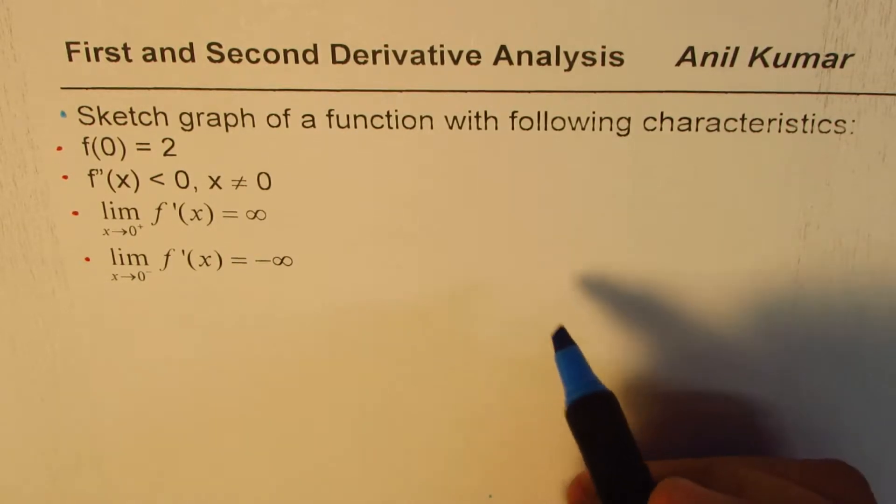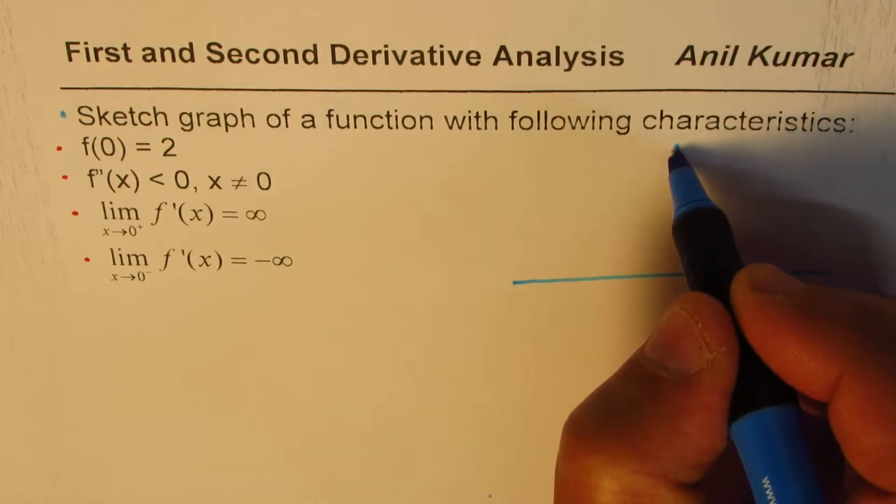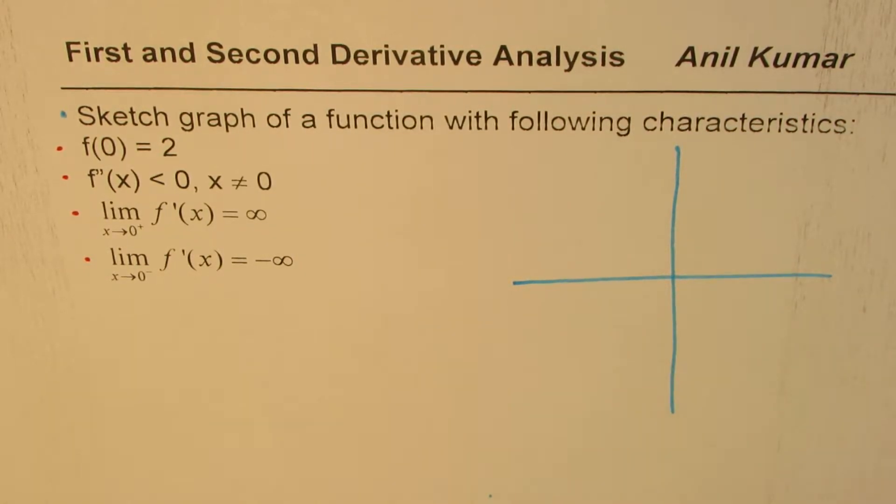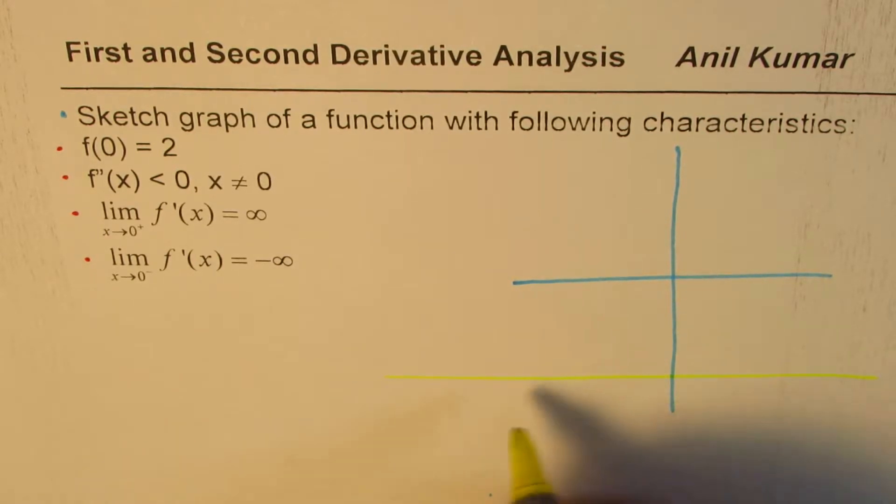What I normally do is, you know, we are always given a graph paper. Let's say this is our graph paper. We are going to sketch a rough graph here. But what I do is, I try to analyze the given information somewhere here. We call this as our rough work column.